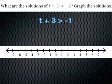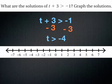The opposite of adding 3 to t would be subtracting 3 from both sides. You're left with t > -4.